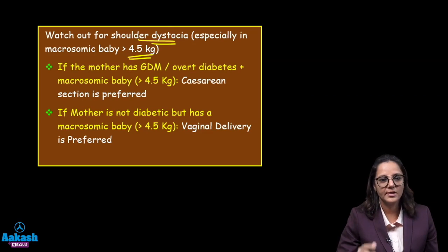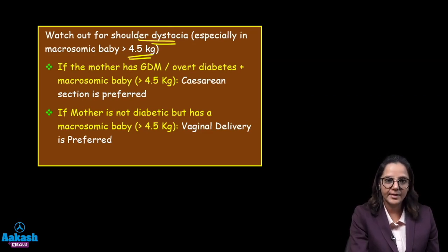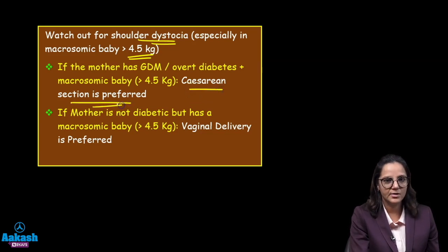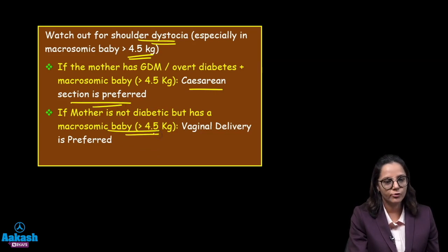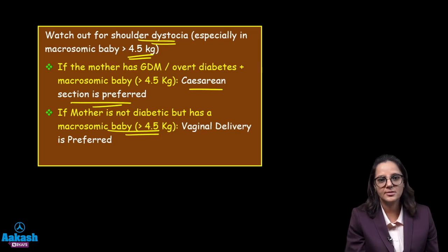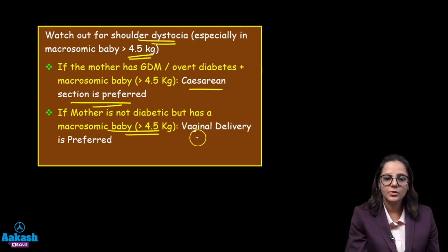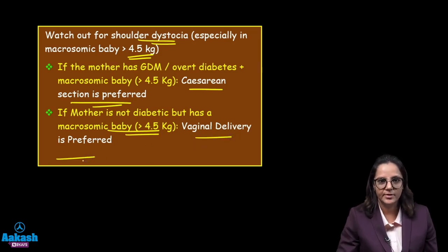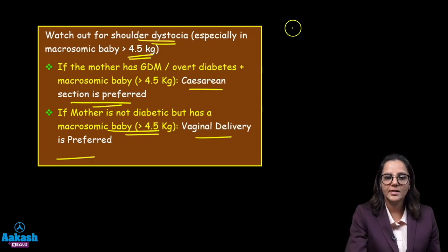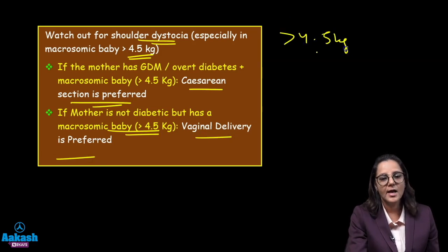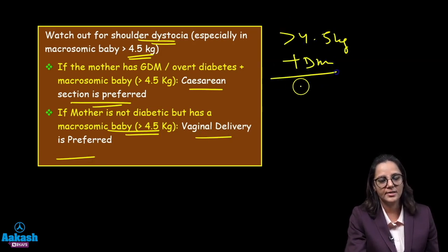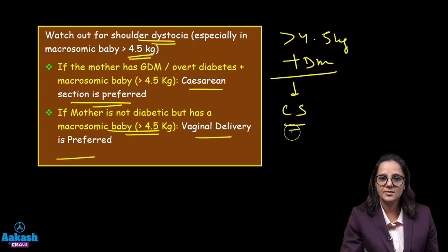Will you go for a cesarean section or not? There are two very sharp guidelines. If the mother is diabetic and she has a macrosomic baby, cesarean section is preferred. But if the baby is just macrosomic, more than 4.5 kg, and the mother is not diabetic — neither overt diabetes nor gestational diabetes — you will go ahead with vaginal delivery. Only when the baby is more than 4.5 kg AND the mother is diabetic, both conditions, then only you will go for a cesarean section.